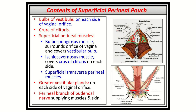The greater vestibular gland (Bartholin's gland) and posterior labial vessels are also located here. The contents include: bulb of the vestibule, crura of clitoris, superficial perineal muscles (bulbospongiosus, ischiocavernosus, superficial transverse perinei), greater vestibular gland, and the perineal branch of the pudendal nerve. This last point is very important — it is the perineal BRANCH of the pudendal nerve, not the pudendal nerve itself.